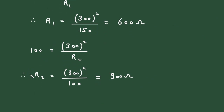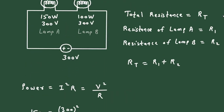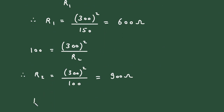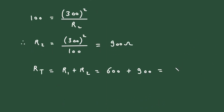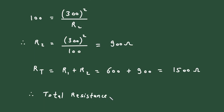So the value of R2 is 900 ohm and the value of R1 is 600 ohm. We have to find RT. RT = R1 + R2, so RT = 600 + 900 = 1500 ohm. Therefore total resistance is equal to 1500 ohm.